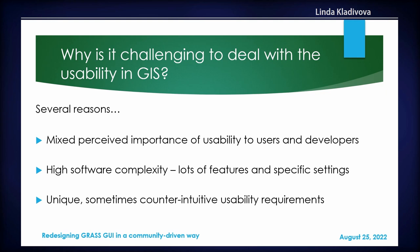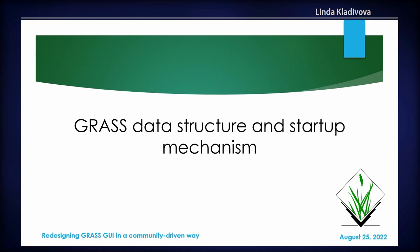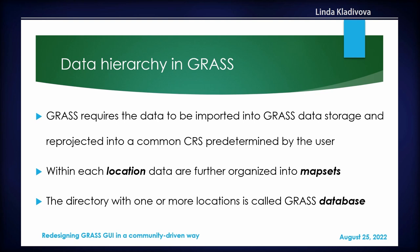Anyway, we tried to change the user experience in GRASS GIS. In order to better understand what we actually did, I'll explain some terms about data structure and startup mechanism. In GRASS GIS, you basically need to first define your coordinate system and then you can import your data. We have quite a specific data structure: you have a GRASS database as the directory, and inside you have locations representing coordinate systems, which you define first, and then map sets, which you can imagine as sets of maps.